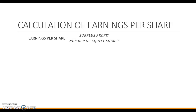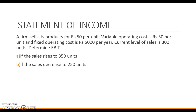Earnings per share is calculated as surplus profit divided by number of equity shares, telling us how much is earned for one share. To illustrate leverage with an example: a firm sells products for Rs. 50 per unit, the variable operating cost is Rs. 30 per unit, and the fixed operating cost is Rs. 5,000 per year. The current level of sales is 300 units. We need to determine EBIT if sales rises to 350 units and if sales decreases to 250 units.